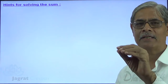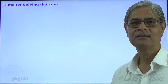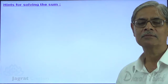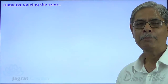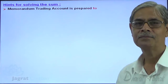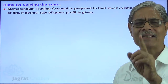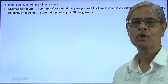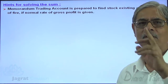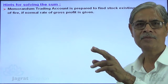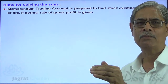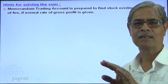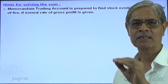On the basis of the estimated stock, we can file a claim for insurance before the insurance company. To estimate the stock, a Memorandum Trading Account is prepared. This is exactly alike to a trading account with the following basic differences: a normal trading account is prepared for the whole accounting year, while the Memorandum Trading Account is prepared from the beginning of the year till the date of fire. Suppose fire has occurred after seven months — then you prepare a trading account for seven months. That is the Memorandum Trading Account.